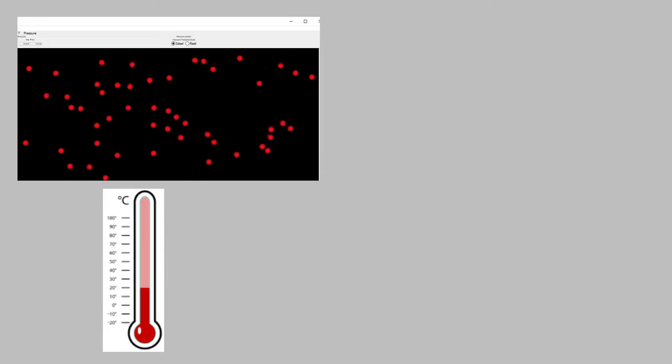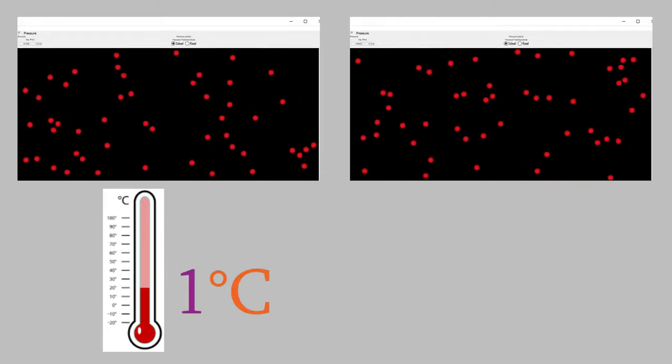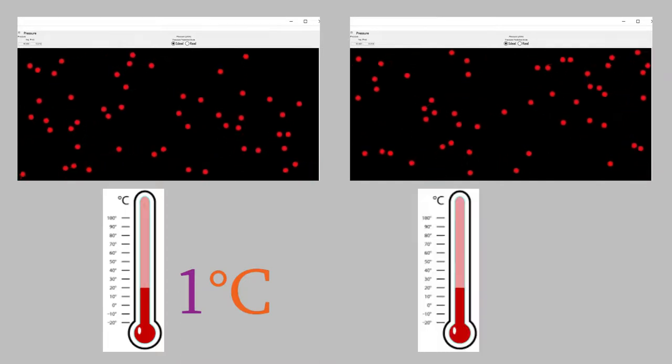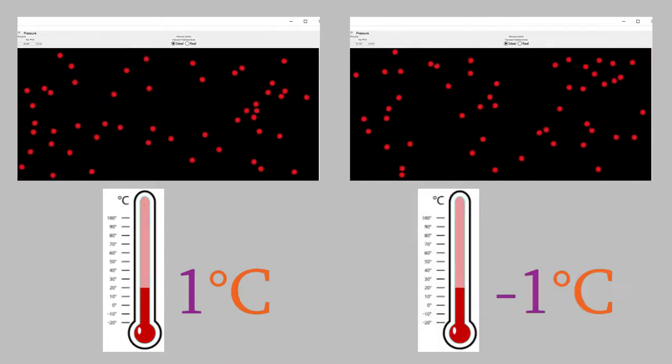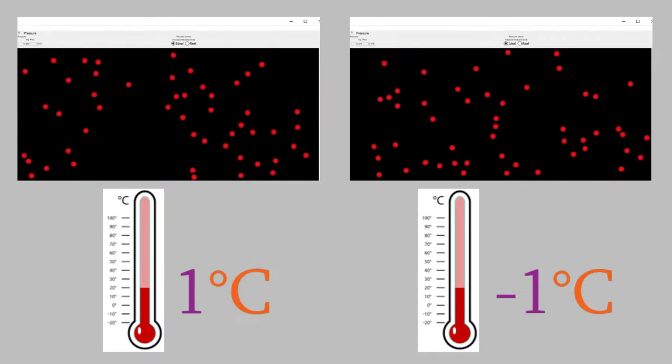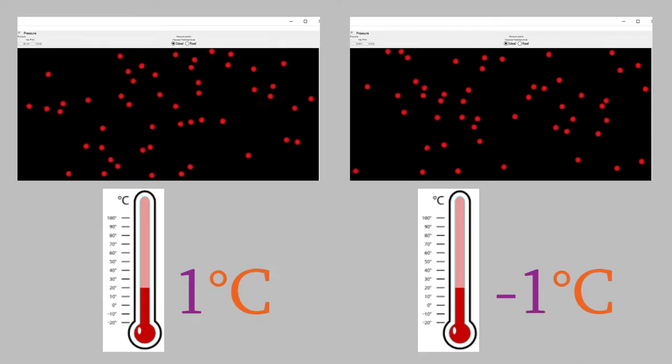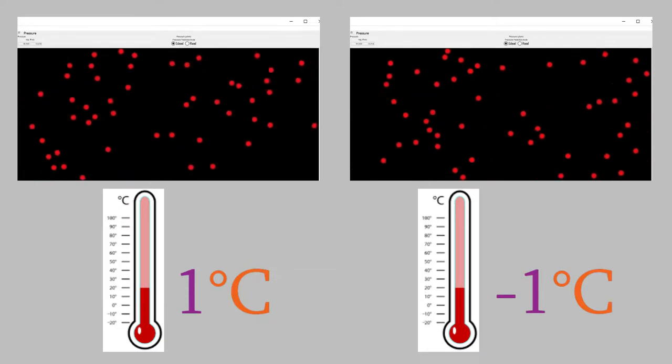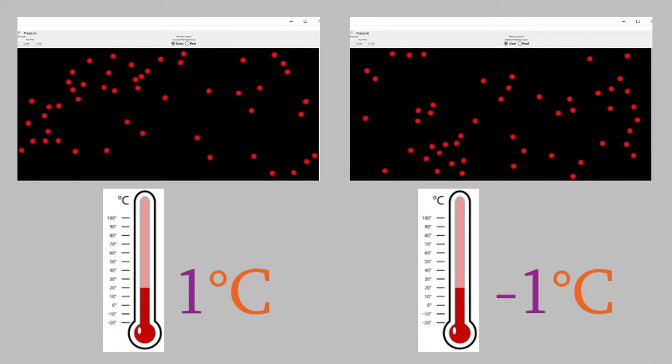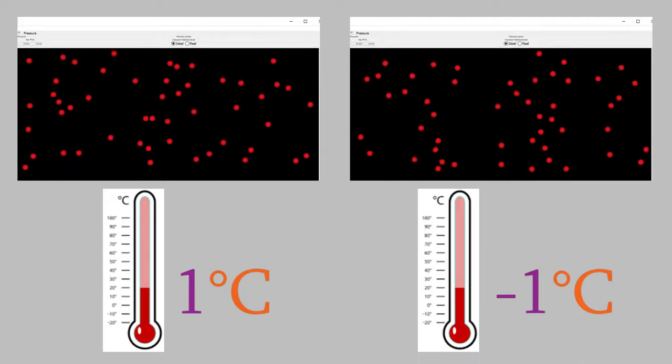But, suppose we had a gas at one degree Celsius, and we then dropped its kinetic energy a bit. If we did that, the temperature would decrease, perhaps to negative one degree Celsius. But that doesn't make sense. The temperature should be proportional to the kinetic energy, and kinetic energy is always a positive number. So in order to make sense, our temperature scale should never give us negative numbers.